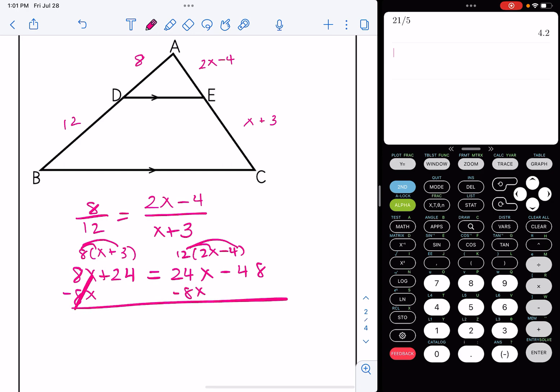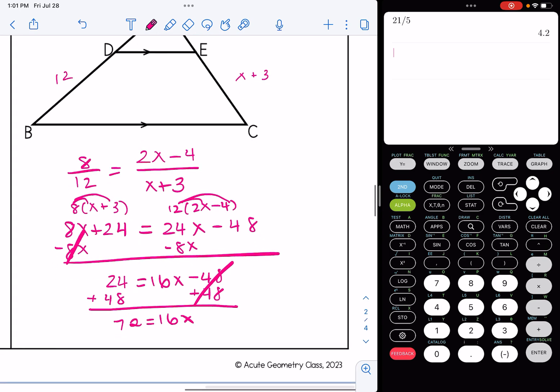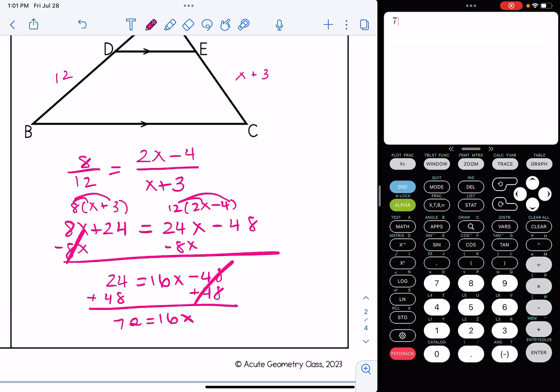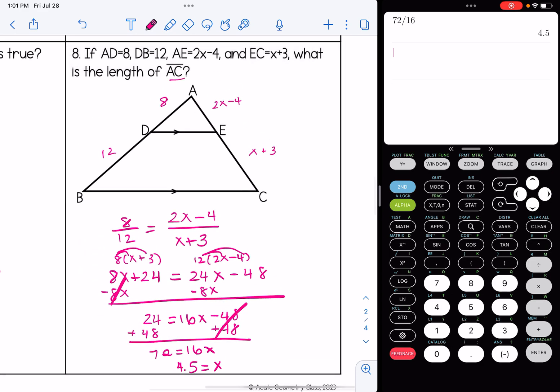We get 72 equals 16X and X is 4.5. But notice this question didn't ask us for X, it says find the length of AC. So we're going to have to plug back in. AE is 2X minus 4, so 2 times 4.5 minus 4, that's 5.